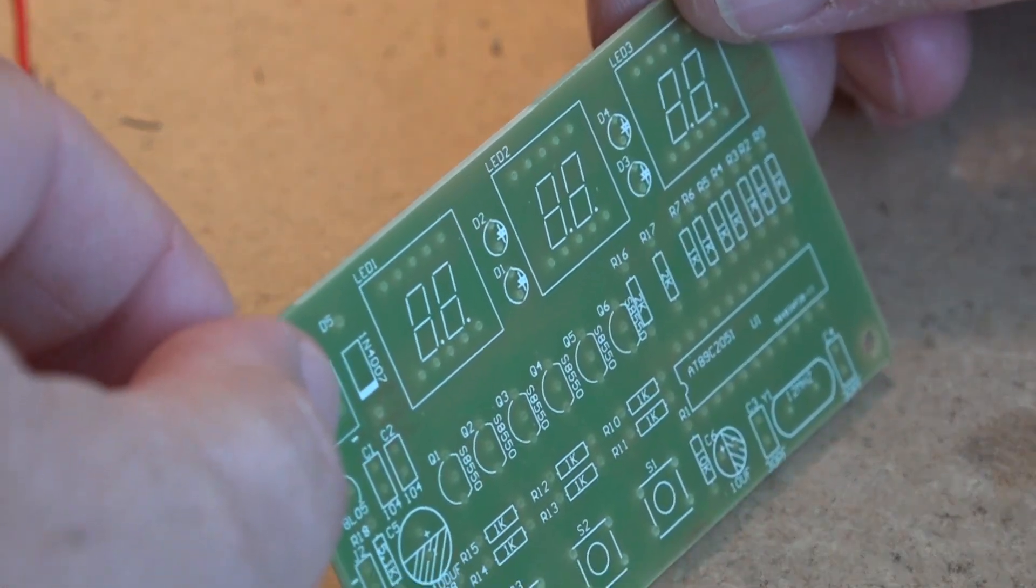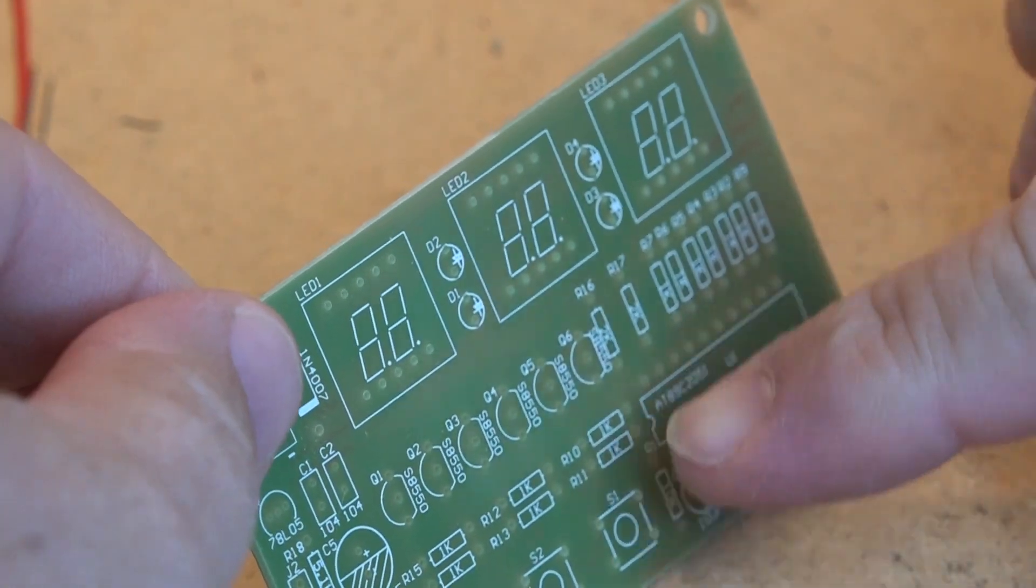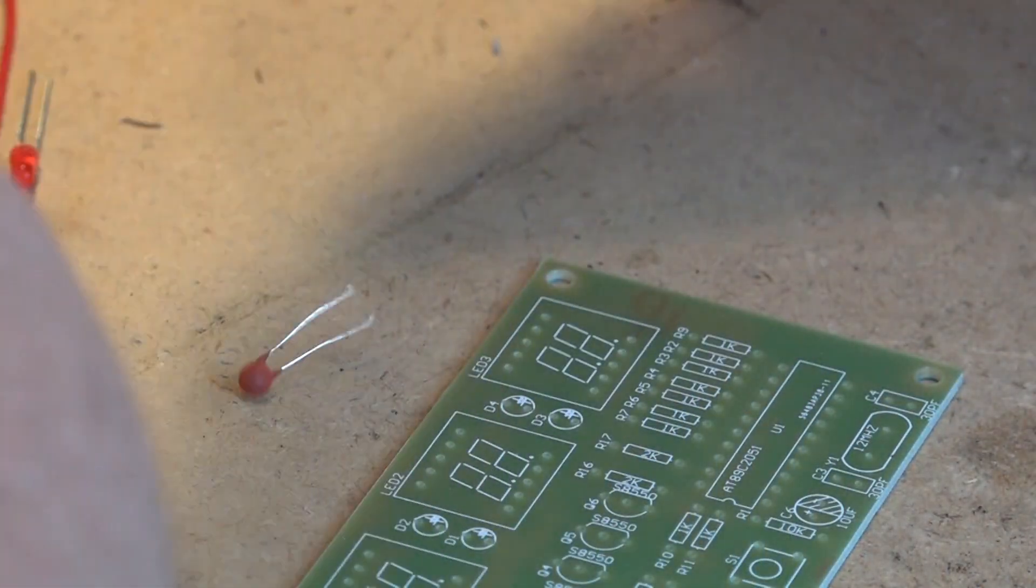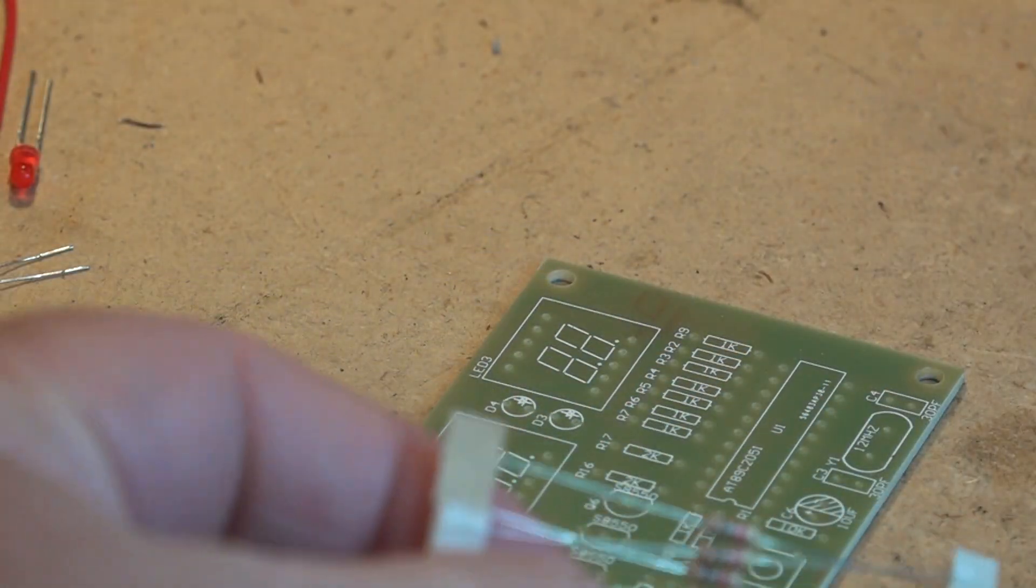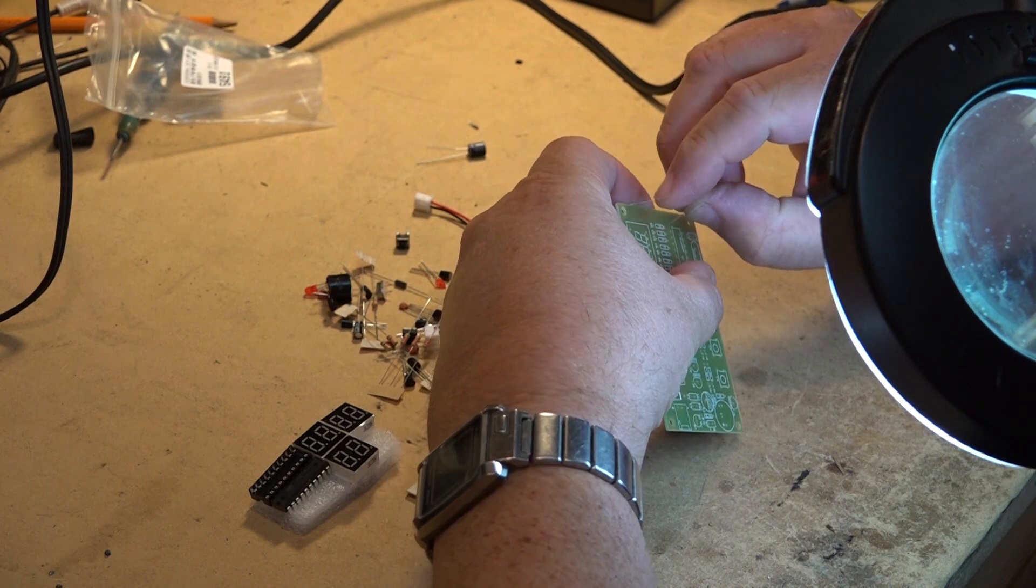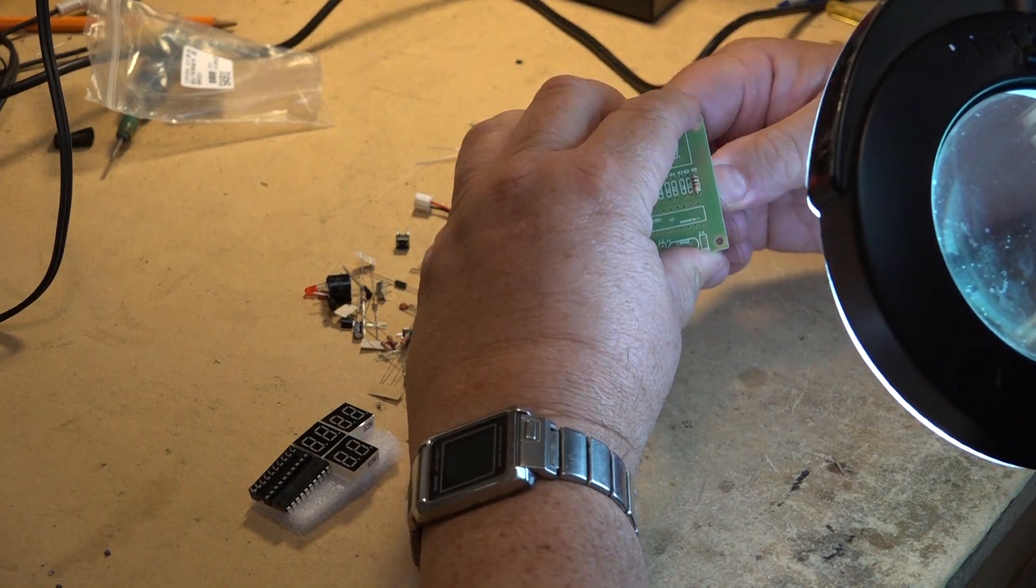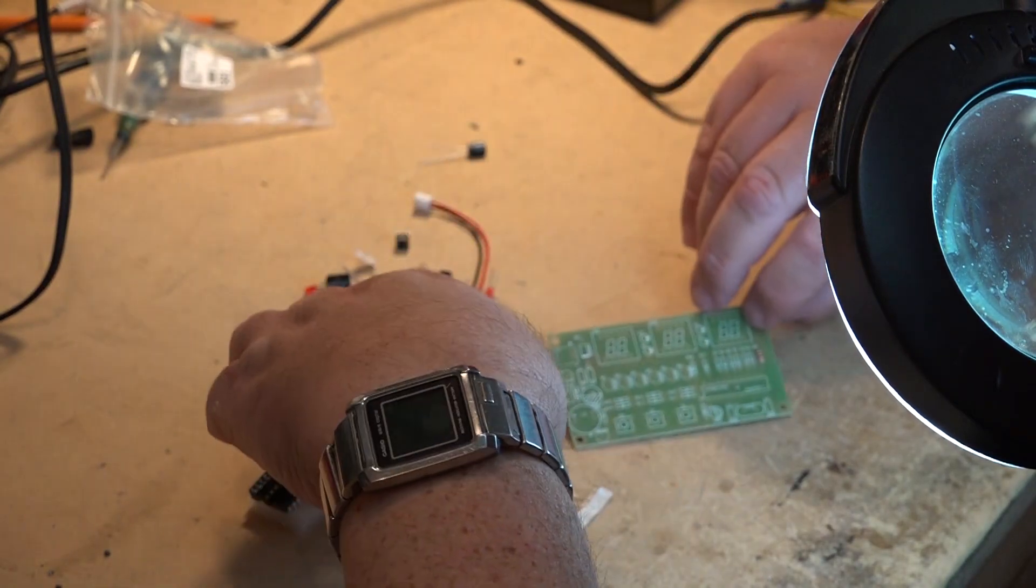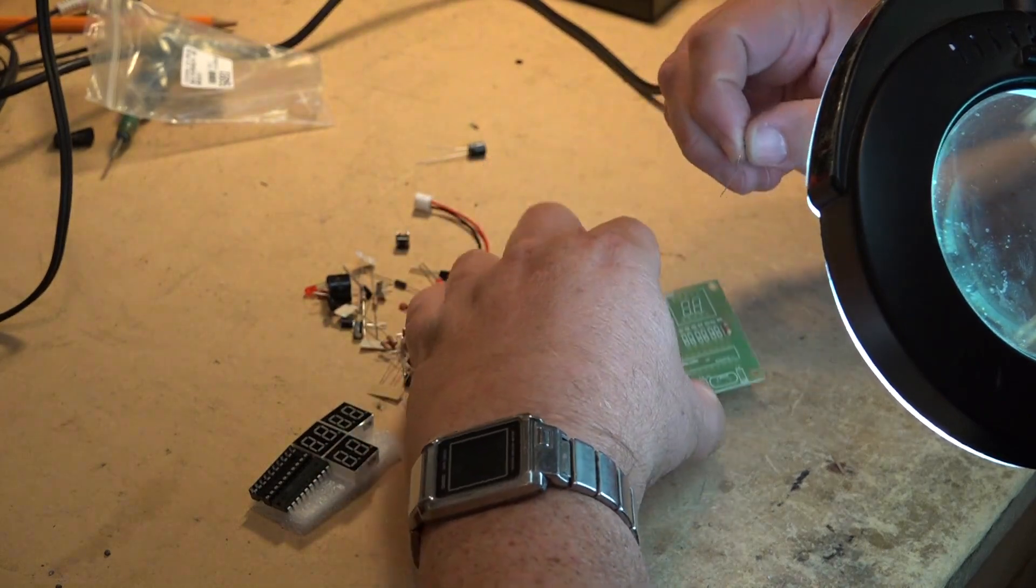First things first, we'll start by mounting the 1k resistors. I've got a series of 1k resistors here, brown black red. I'm going to mount all the 1k resistors on the board and solder them. This is a through-hole kit, so I'll mount the resistors flush to the board, put them all in place first, and then solder them all at once.